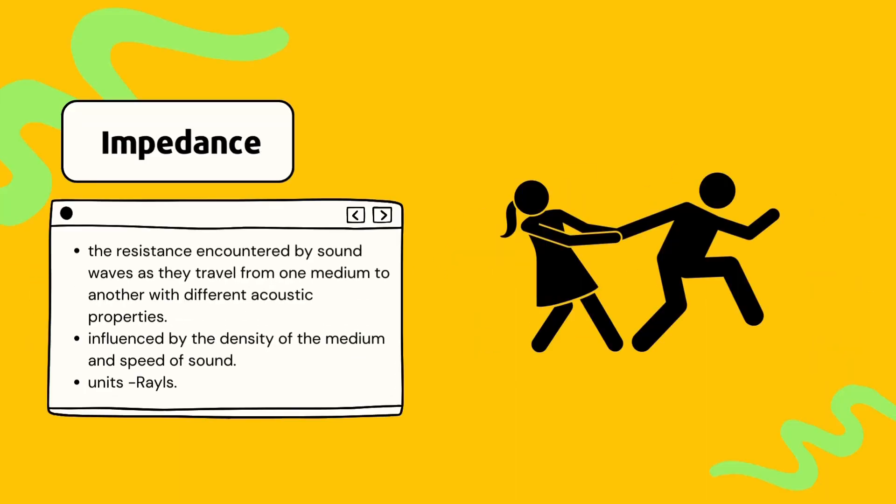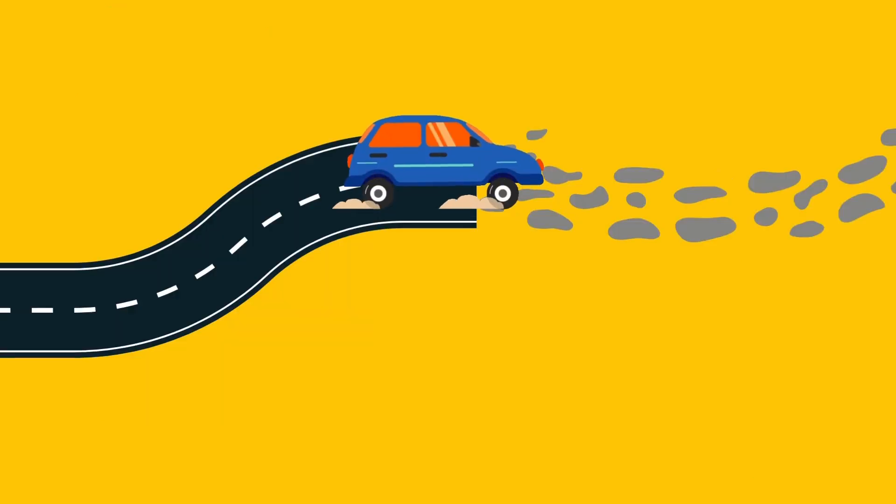Let's talk about impedance. Impedance is the resistance encountered by sound waves as they travel from one medium to another with different acoustic properties. Think of it like driving a car from a smooth road onto a rough road. As the car transitions between the two surfaces, it encounters resistance and may experience a change in speed or direction. Similarly, when sound waves encounter boundaries between different tissues or mediums in the body, they experience changes in impedance.